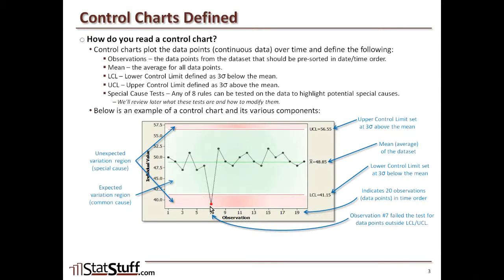Minitab will highlight that data point in red to call it out, indicating that observation number seven had failed the test because it falls outside of that region — in this case, falling below the lower control limit.